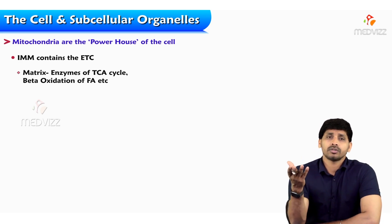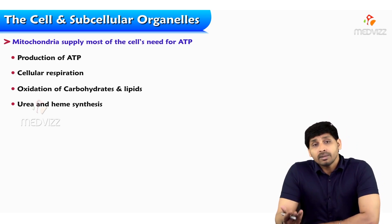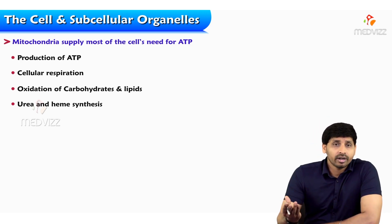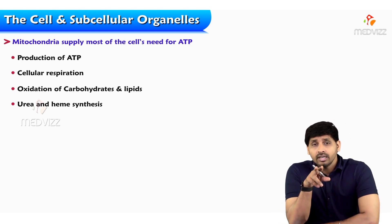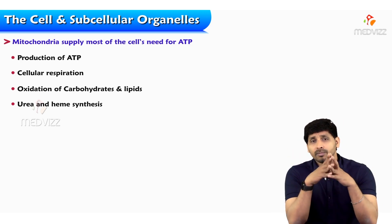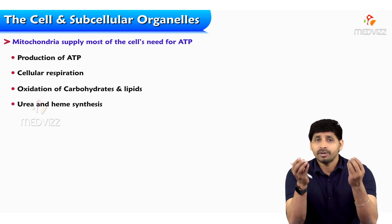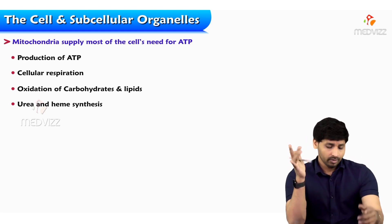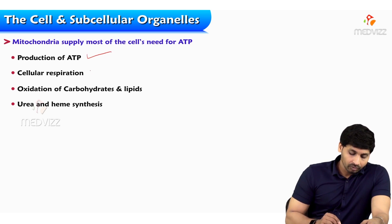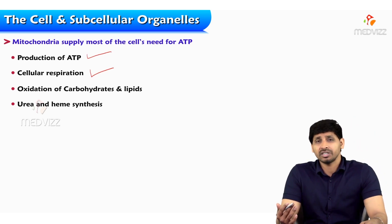As mentioned, the TCA cycle and beta oxidation of fatty acids occur side by side: when fatty acids undergo degradation, acetyl-CoA is produced, and the TCA cycle starts with acetyl-CoA, which enters the cycle and produces energy. The main function of mitochondria is supplying ATP required by the cell — the ATPs produced are utilized for the cell's needs.